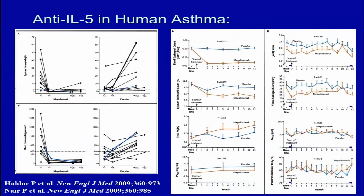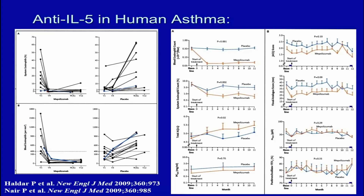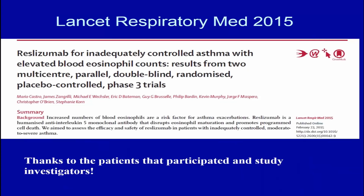Reslizumab was also shown to have the same effects in asthma. Mepolizumab and reslizumab are the two forms of anti-IL-5, really indistinguishable in their effects, that had been approved. Benralizumab, the anti-IL-5 receptor agent, is expected to be available that same year with a similar profile.